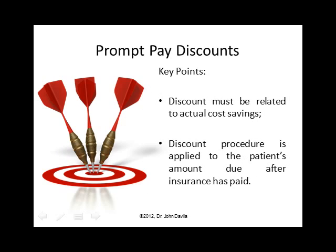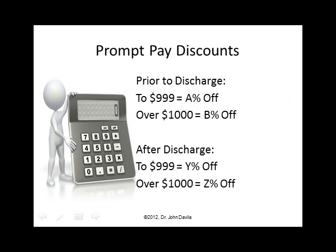Yes, you could get the discount, but there was a catch. First, to qualify, the discount must be related to actual cost savings. And second, the discount procedure is applied to the patient's amount due after insurance is paid. So the discount was given only on the percentage of what the patient had to pay as co-pay. Here's an example of how it worked: prior to discharge, up to $1,000 you would get A percent off; over $1,000 it'd be B percent. After discharge, $999 would be Y percent and over $1,000 would be Z percent. These percentages were different because they were based on actual savings, so you had to go through your office to figure out exactly how much the patient would actually pay you.